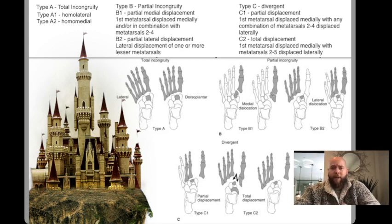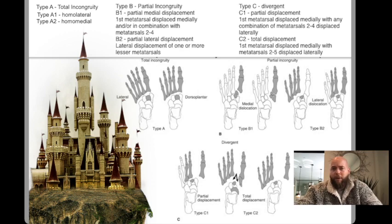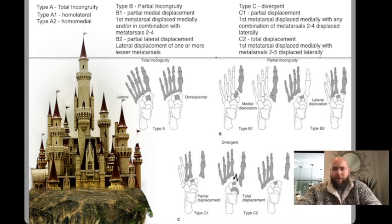Type B is called partial incongruity. In B1, you get a partial medial displacement of the first metatarsal with or without combinations of the second through fourth metatarsals. Any number of the lesser metatarsals, as long as it's not all four of them, will be B's, specifically a B1. A B2 is a partial lateral displacement of one or more of the lesser metatarsals. So if the first metatarsal is involved with some of the lesser metatarsals, it's a B1. If it's just the lesser metatarsals two through four, it's a B2.